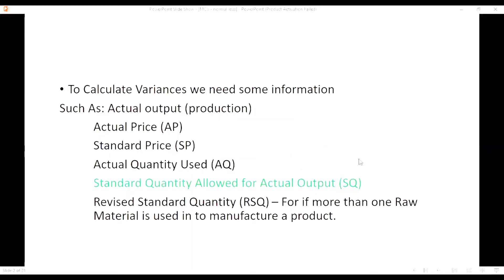Here is the information needed for calculating variances of raw material. Actual price, standard price, and actual quantity are normally given. We have to compute standard quantity allowed for actual output, that is SQ, and revised standard quantity, that is RSQ. Revised standard quantity is calculated when two or three materials are put into a process. For normal loss, there is an impact only on standard quantity allowed for actual output.